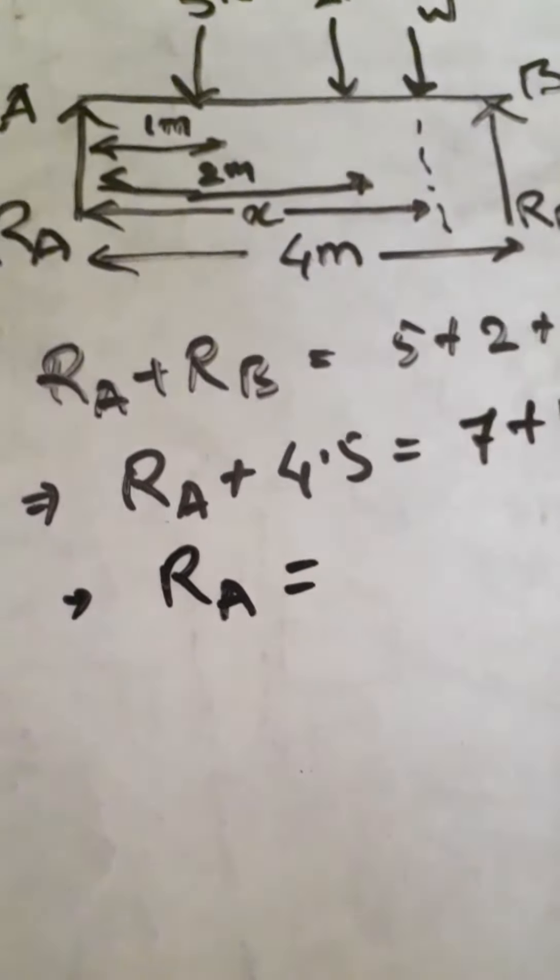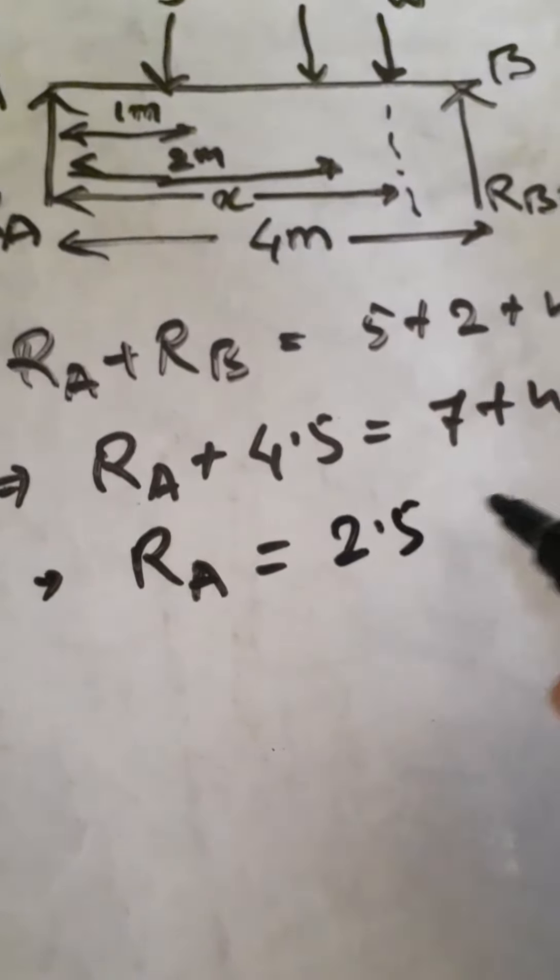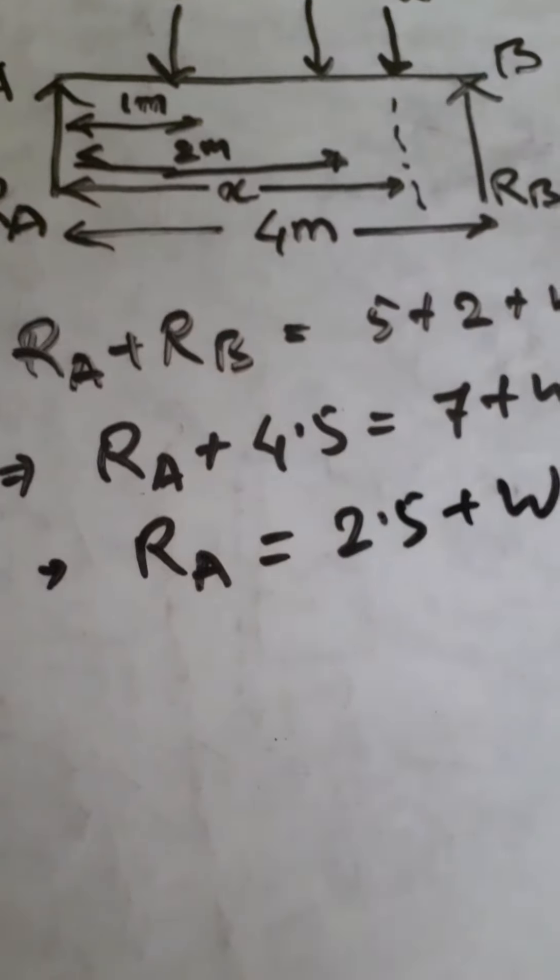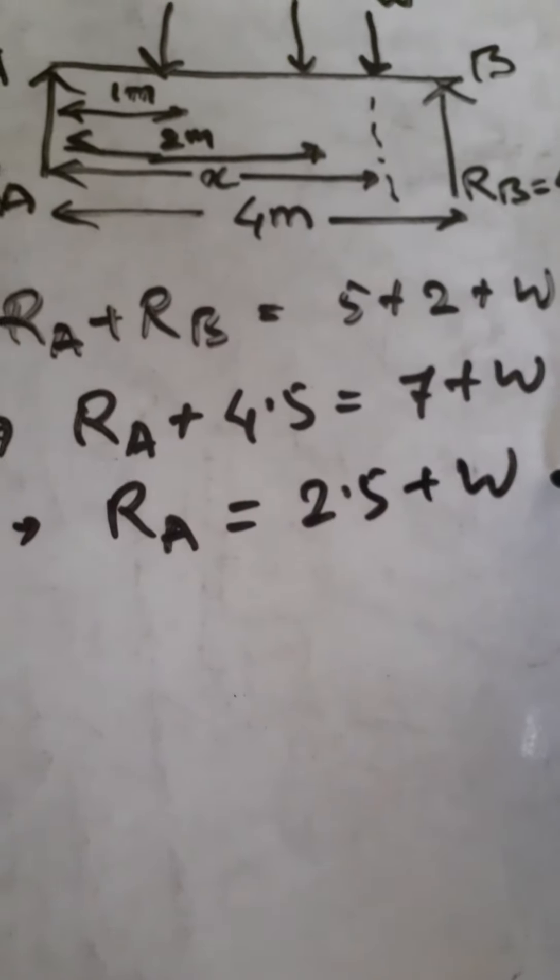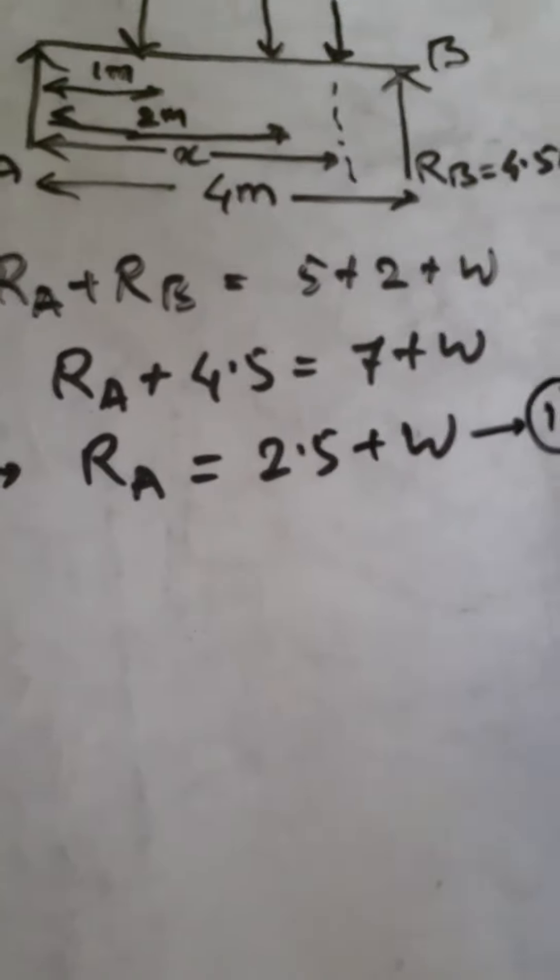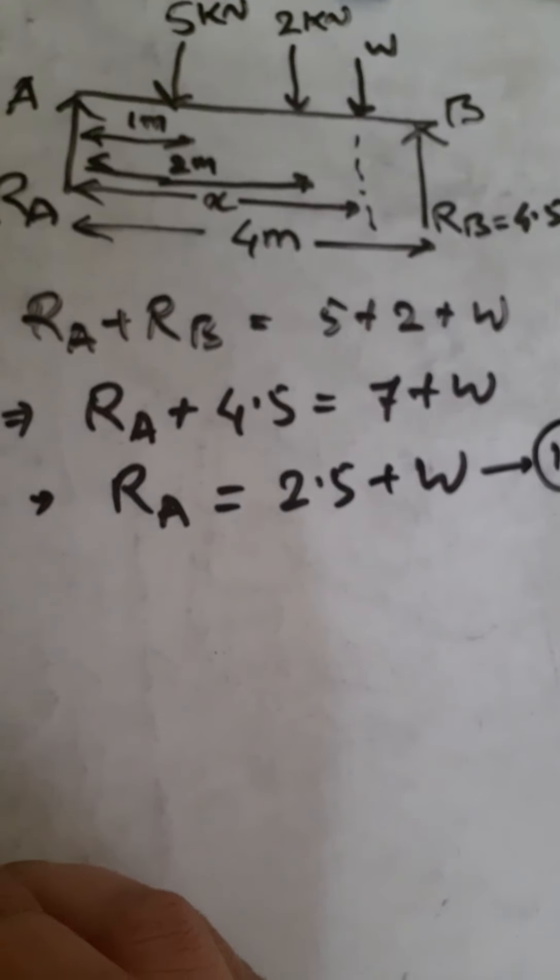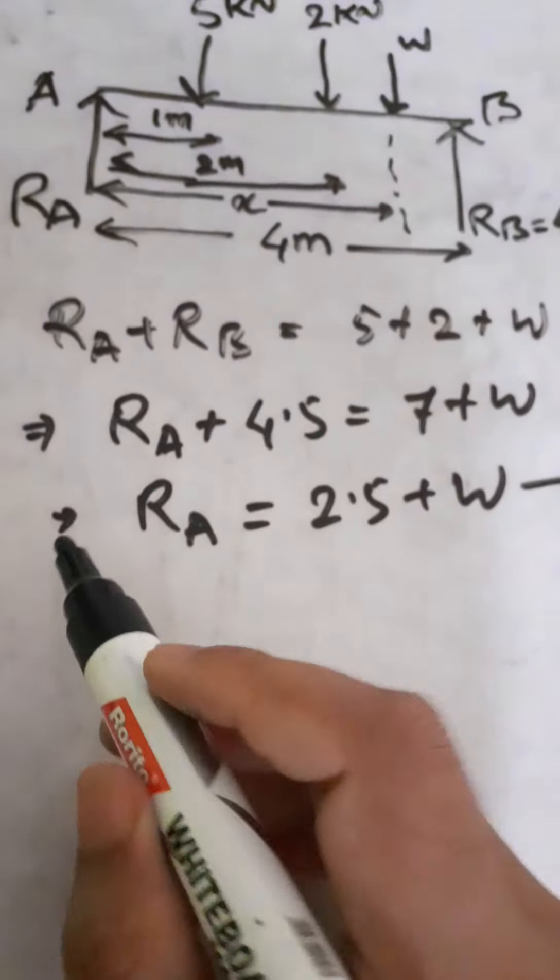So here RA will become as 2.5 plus W. This will become equation number one. Now if we take moment about A as zero.